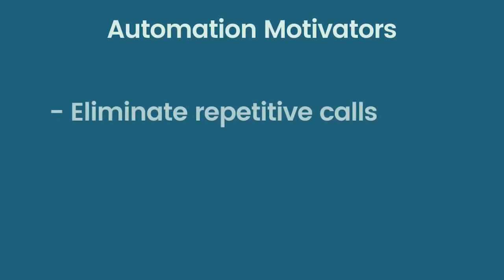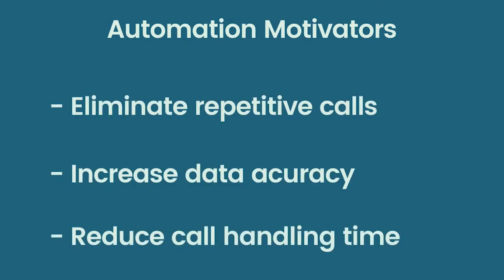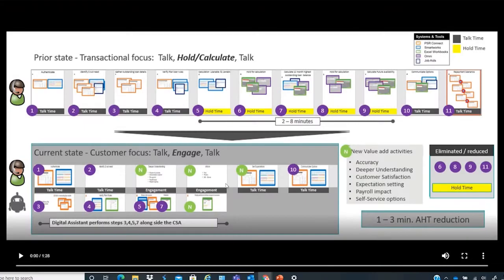The average call handling time for these money or process calls is around 7 minutes 30 seconds to 11 minutes 40 seconds. We took the money or process workflow as our call center attended automation implementation. Our major goals were to eliminate repetitive calls from customers, increase information accuracy, and reduce call handling times.